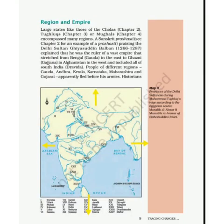Hello students, hope you all are well. Today we will start with page number 9. Let us remind the chapter name, which is 'History: Tracing Changes Through a Thousand Years.' We had started Chapter 1 of history, and here we have a new topic: Region and Empire. We will read this page, but you will come across many new and difficult words in the paragraph, so let us understand the difficult words first.